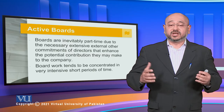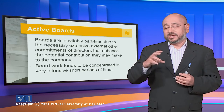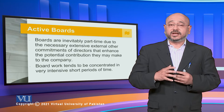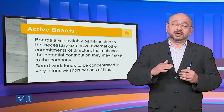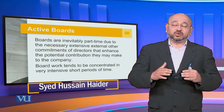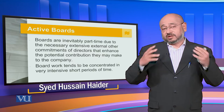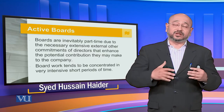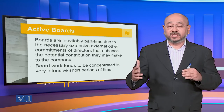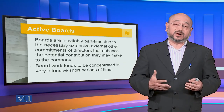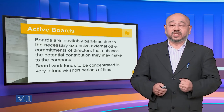Board work tends to be concentrated in very intensive short periods of time. The role of the board is not continuous — it is staggered, tends to be unpredictable, and depends upon situations where strategic direction is needed, where certain decisions are needed, and where the authority of the CEO ends and the authority of the board begins, including all approvals and sanctions. All of these things constitute an active board.